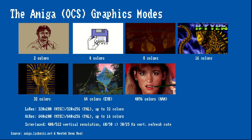The Amiga display hardware also supports two special color modes: Extra Half Bright, which allows for 64 colors, and Hold and Modify, which supports 4096 colors and is great for displaying photos and ray traced images. Finally, there is the overscan mode which allows the Amiga to utilize the border area of the display for graphics as well.